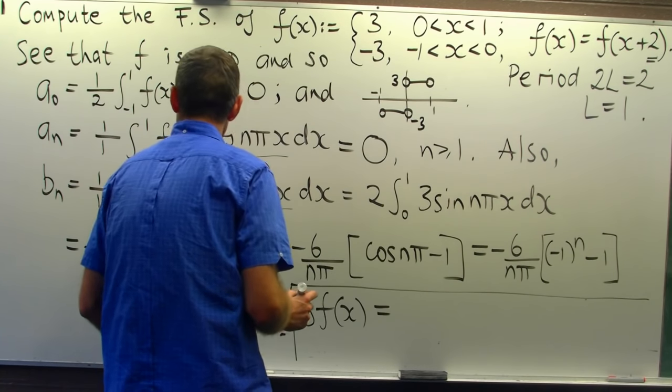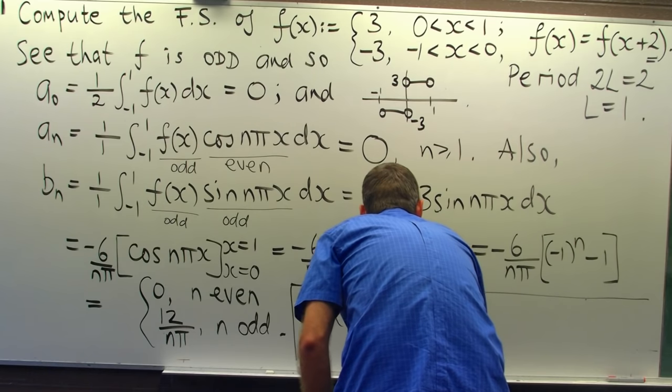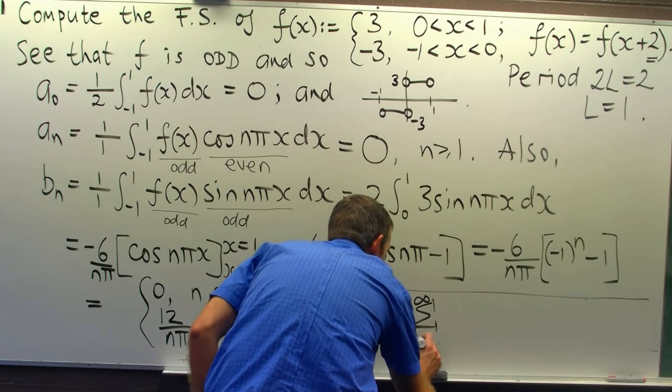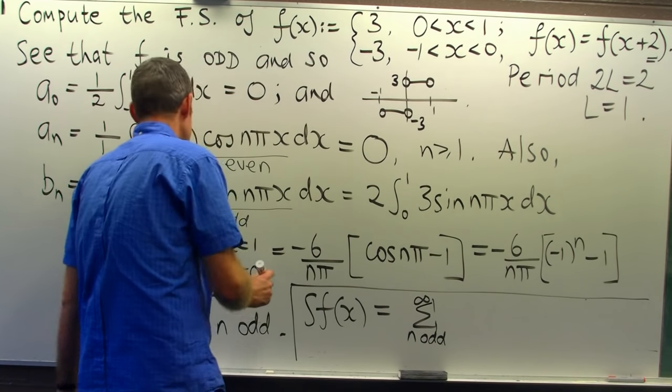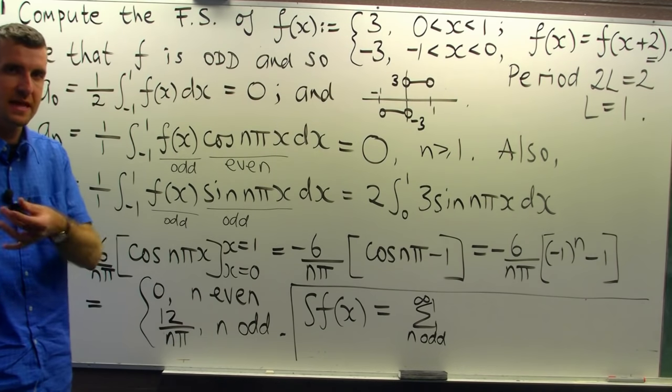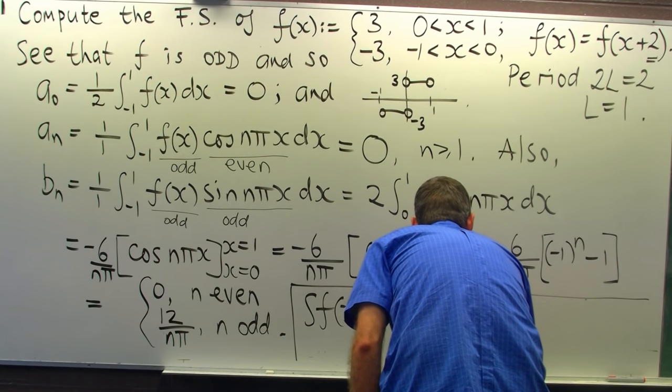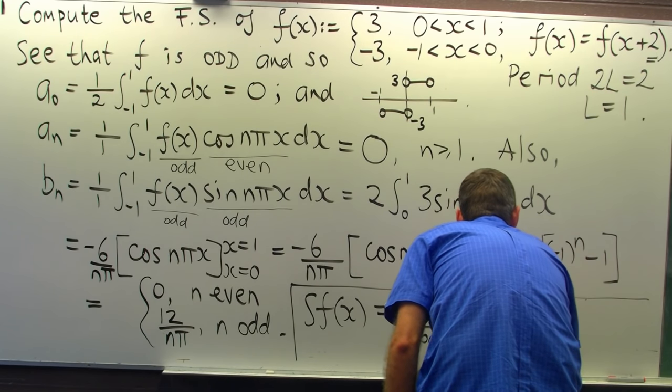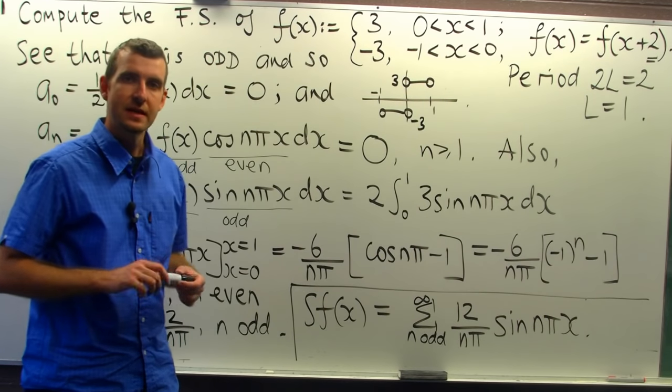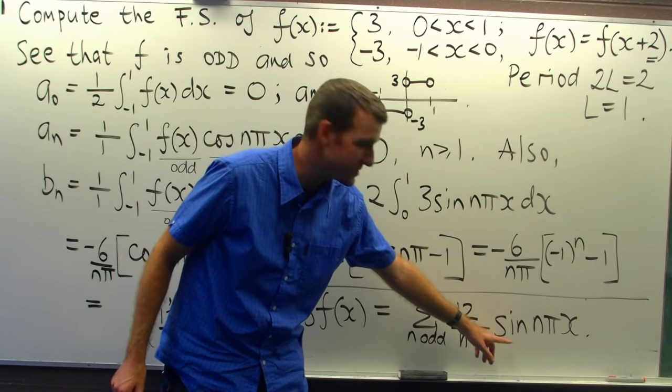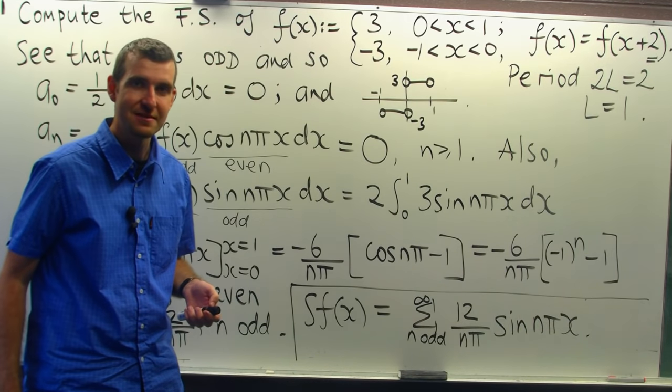So a 0 is 0, a n's are 0, and the only non-zero ones are b n for n odd. So look what I do here. I'm only adding, or I'm only putting in those n that are odd in the sum. Because otherwise, if n's even, then I'm just adding 0, 0 together, right? So this is my Fourier series. Now, there's no cosines in there. There's only sines. So sometimes we refer to this as a Fourier sine series.